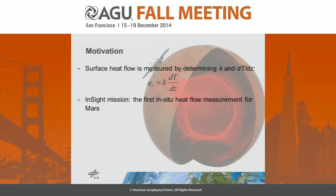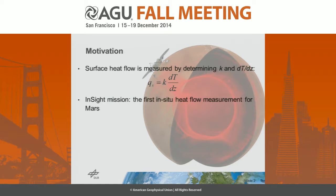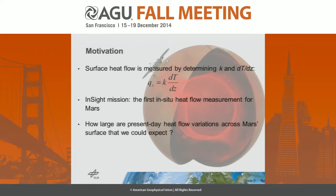We have in situ heat flow measurements for the Earth and Moon, and with the InSight mission starting in 2016 we will also have the first in situ heat flow measurement for Mars. The lander will carry a heat flow probe to the surface of Mars, hammer into the ground, and measure the thermal conductivity and the temperature gradient. The natural question is: how large do we expect the heat flow variation to be?